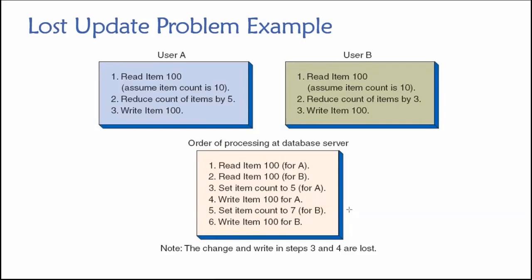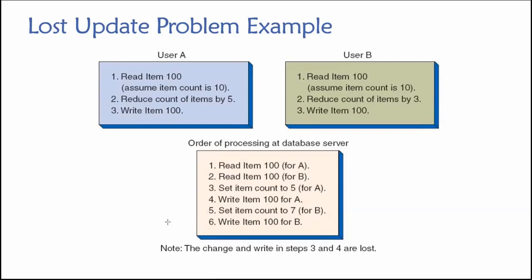However, user B still has work for the database to do. It requests to set the item count to seven — because user B was told there were 10 in inventory and wants to reduce by three, so 10 minus three is seven. They request to set units in inventory to seven, and that result is stored and made permanent. By the time these six steps are completed, in this lost update scenario, the database shows seven units of item 100 in inventory.